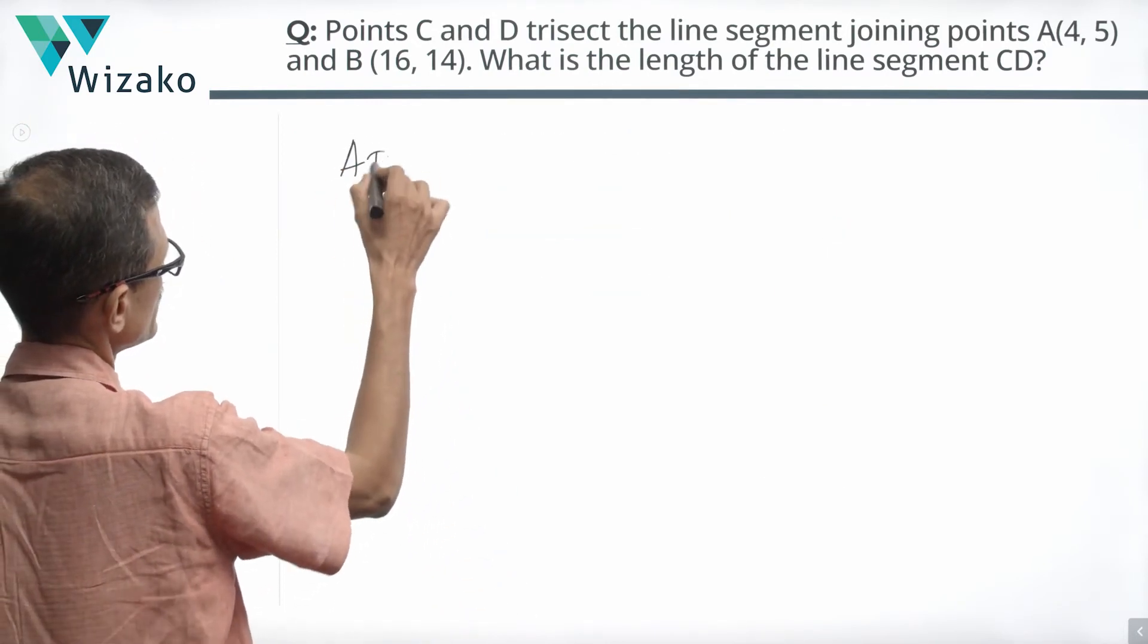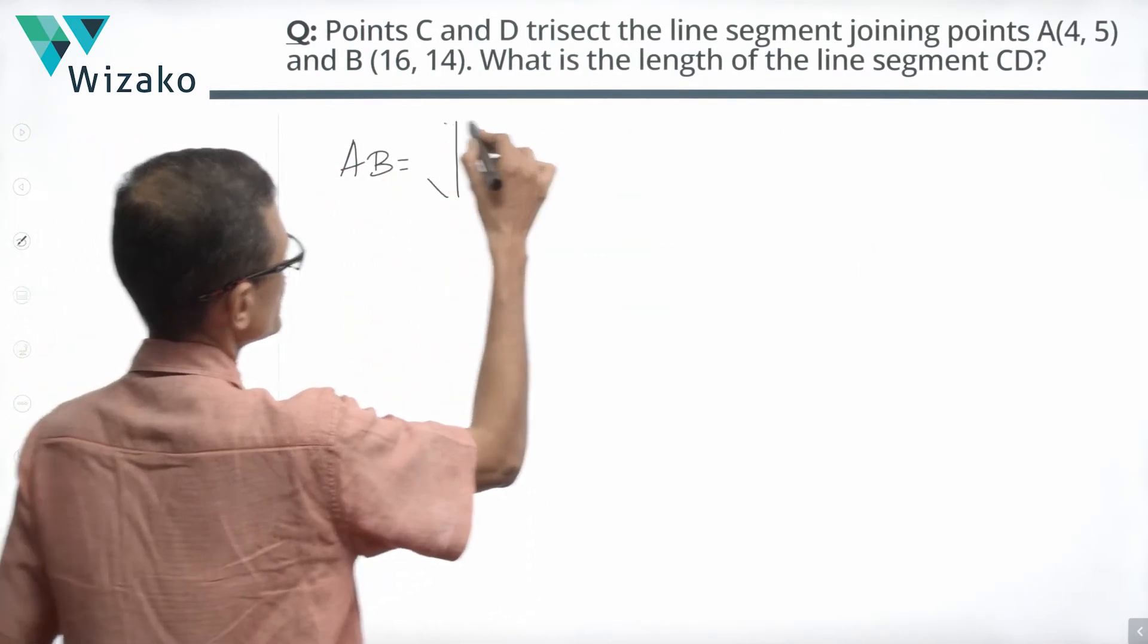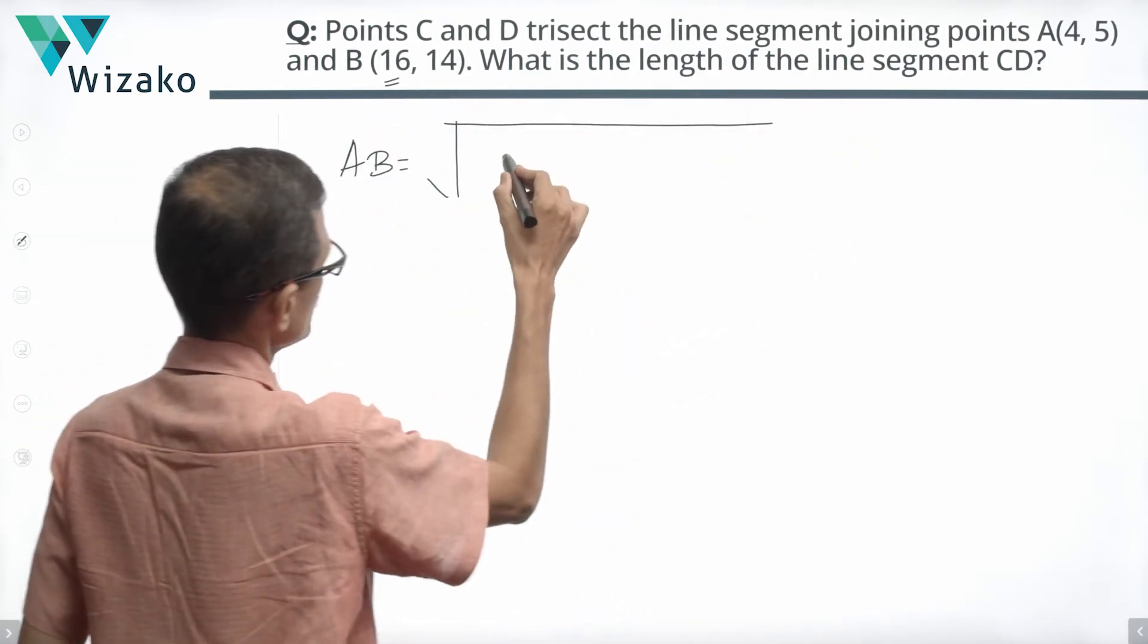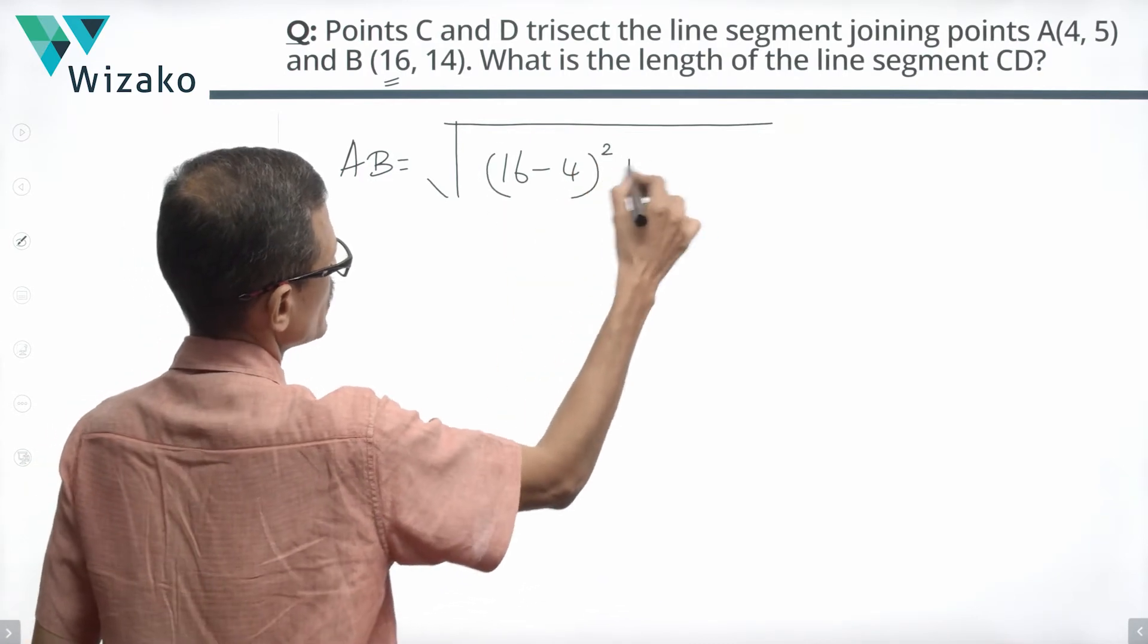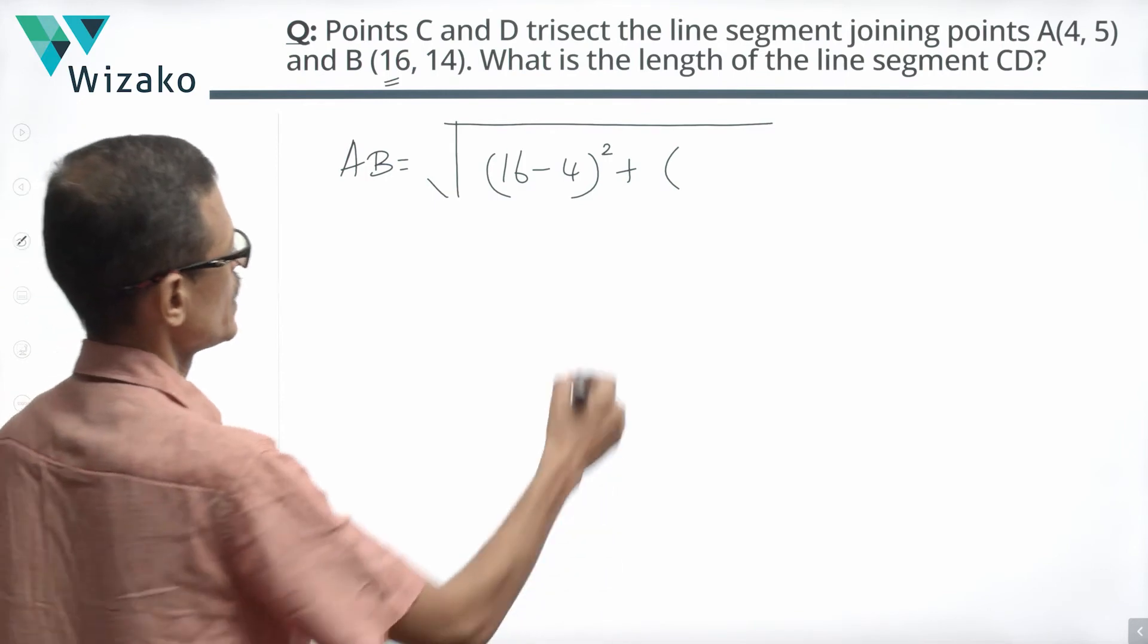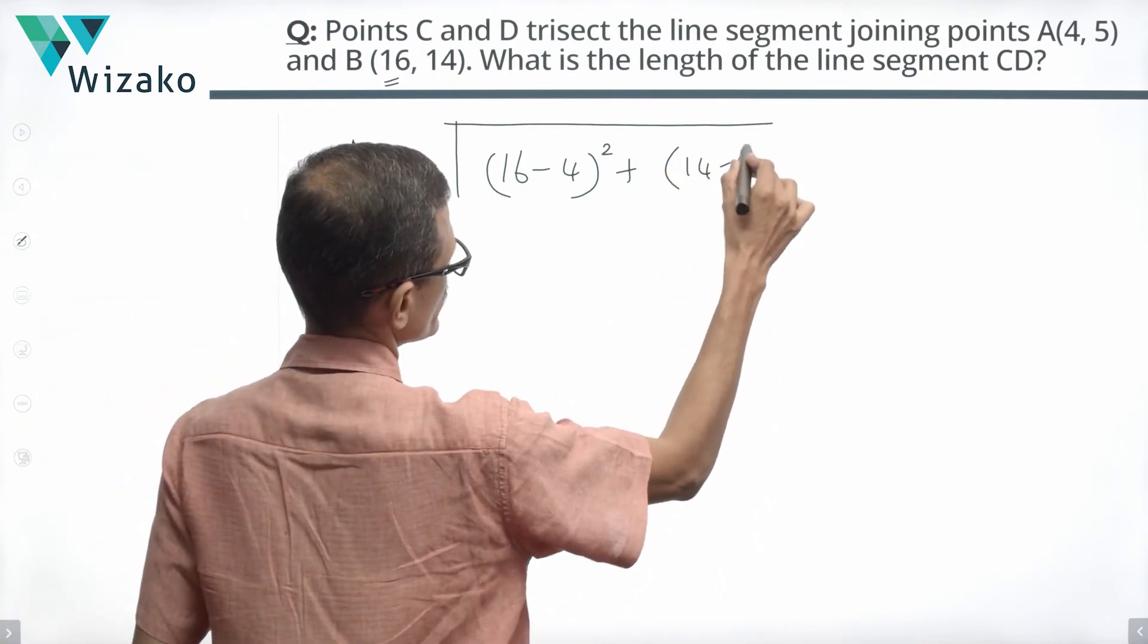So measure of line segment AB will be equal to X2 minus X1, X2 is 16, X1 is 4. So 16 minus 4 the whole square plus Y2 minus Y1, Y2 is 14, Y1 is 5. So 14 minus 5 the whole square.